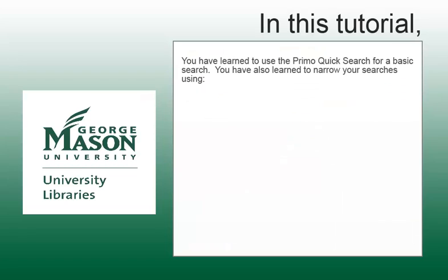The Primo Quick Search is one excellent way to search the library's resources for materials to support you in your research, coursework, or professional development. In this tutorial, you have learned to use Quick Search to conduct a basic search, and then narrow that search down by resource type, by year of publication, and by subject area.